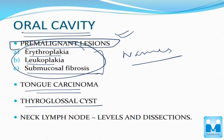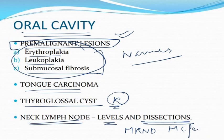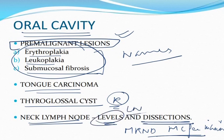Also read about thyroglossal cyst. This next section — neck dissection — is very important. You have to know the levels and dissection types: modified radical neck dissection, MacFee incision, and the various levels of lymph nodes. You have to study the levels of lymph nodes and the dissection techniques, which come in ten types.